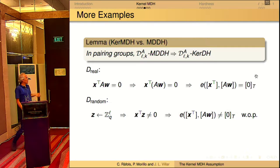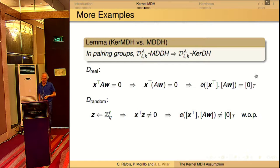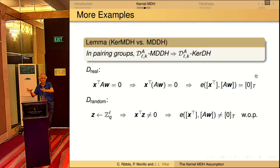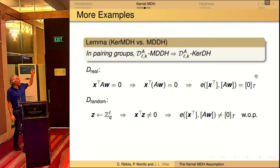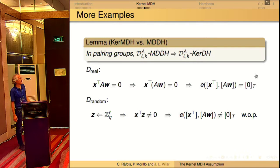The first result is that if the MDDH decisional problem is hard, then the kernel MDDH problem is also hard. It's what one expects: if the decisional problem is hard, then the corresponding computational problem is also hard. So every example of an MDDH problem gives us another example of the kernel MDDH problem.